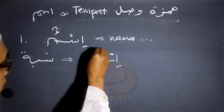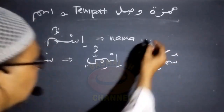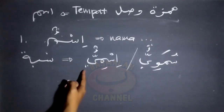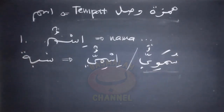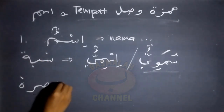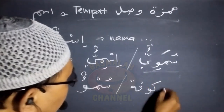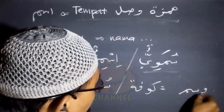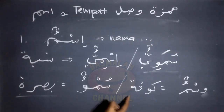Nisbah dari lafad ismun adalah 'ismiun' atau juga 'sumawiyun'. Manakala nisbahnya ismiun, maka mengikuti perubahan akhir yaitu lafad ismun. Sementara manakala nisbahnya sumawiyun, maka ini mengambil dari lafad yang awal. Isytiqaq daripada lafad ismun menurut ulama Basroh adalah 'sumwun', sementara menurut ulama Kufah adalah 'wasmun'. Pendapat yang menyatakan lafad ismun berasal dari sumun atau simun adalah pendapat ulama Basroh, sementara ulama Kufah menyatakan ismun berasal dari lafad wasmun.